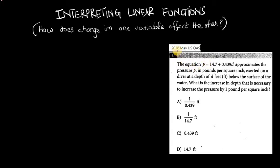I encourage you as always to pause the video and figure this out on your own. Let's give it a read. The equation p equals 14.7 plus 0.439d approximates the pressure p in pounds per square inch exerted on a diver at a depth of d feet below the surface of the water.